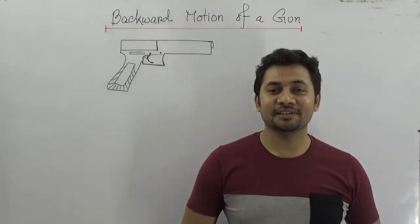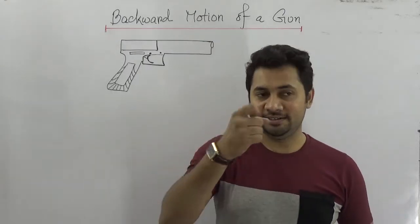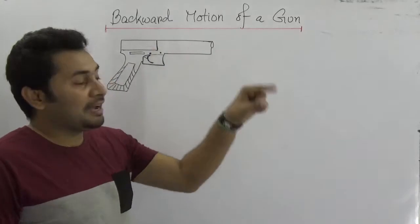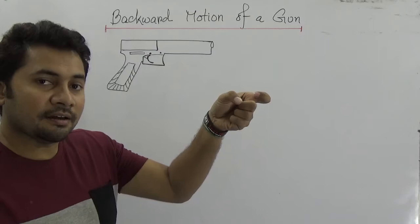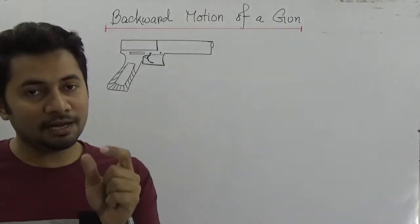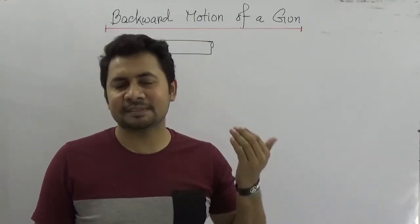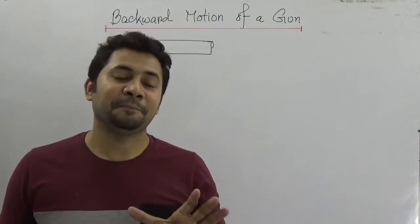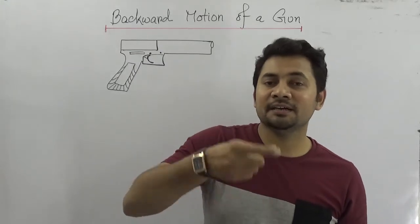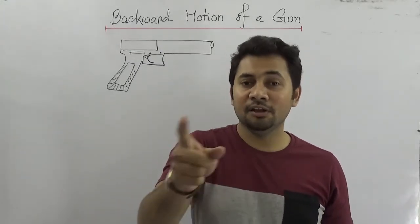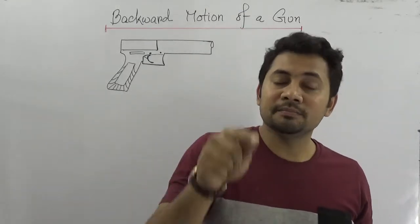Hello everyone, welcome to Fahad's tutorial. Today in this class I shall be explaining about gun recoil — the backward motion of a gun when it is shot. The gun seems to have a backward momentum, and how this happens is very important for your question paper. You may have some mathematics about the backward direction of guns. I already uploaded the class on the law of conservation of momentum, and following this we can explain this backward motion of the gun.